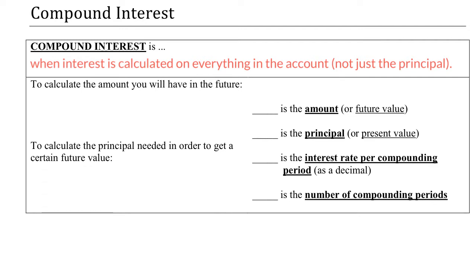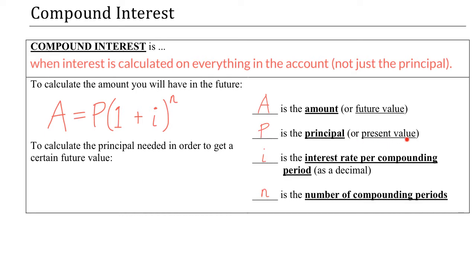If you want to figure out — say you're investing $1,000 today and want to know how much it will be worth five years from now — you would use this formula, where A is the amount or future value, P is the principal or present value, I is the interest rate per compounding period, and N is the number of compounding periods.